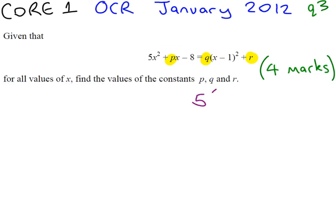So, if we substitute q as 5, this is now the right-hand side of our equation. The left-hand side, with q as 5, is going to become 5x squared plus px minus 8. We know those two are equal, so it's just a case of expanding the right-hand side and comparing coefficients.